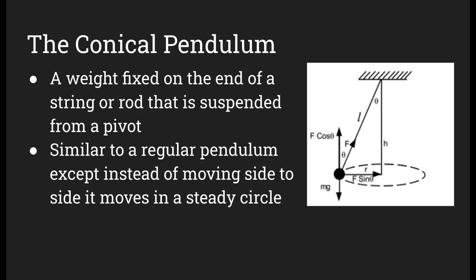The conical pendulum is a weight fixed on the end of a string or rod — shown as the black dot in the image — suspended from a pivot. It's similar to a regular pendulum, except instead of moving side to side, it moves in a circle. The dotted line at the bottom shows the path it traces.